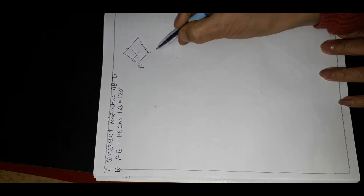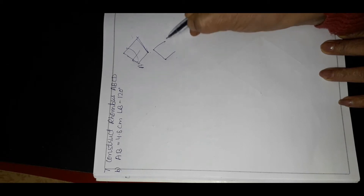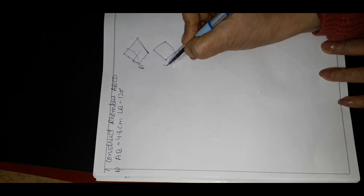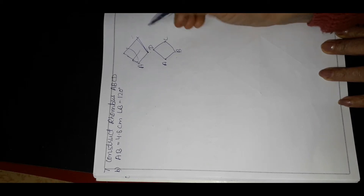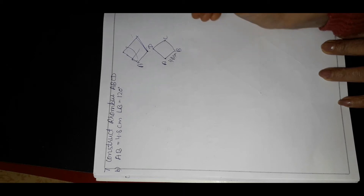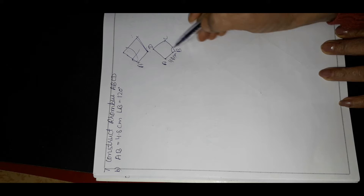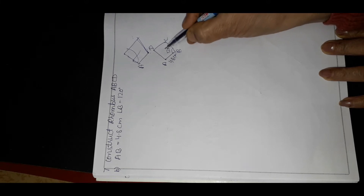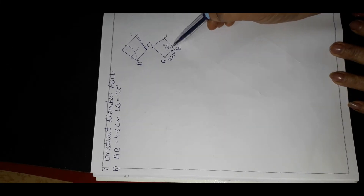Let me redo this. All sides will be equal — A, B, C, D — all sides equal to 4.8 cm. Angle B is given as 120 degrees. Since in a rhombus all sides are equal and opposite angles are equal, angle D is also equal to 120 degrees.